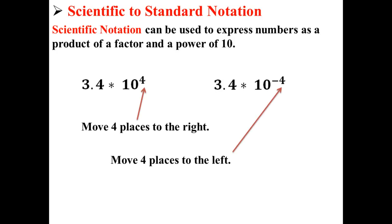Here 10 to the positive fourth means that we'll be moving the decimal point four places to the right, while 10 to the negative fourth means that we'll be moving the decimal point four places to the left.